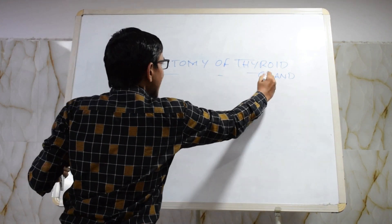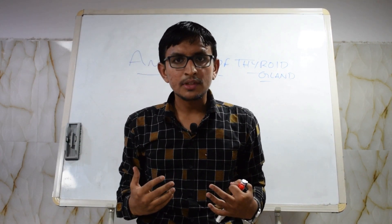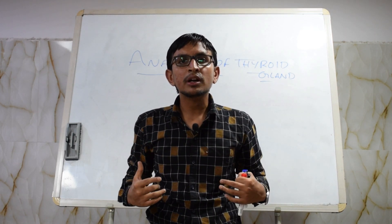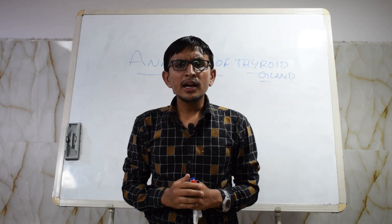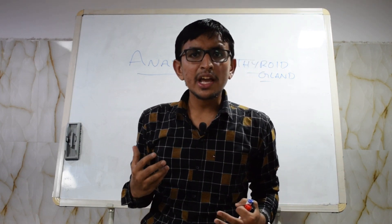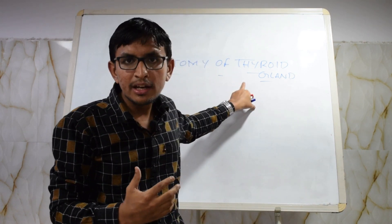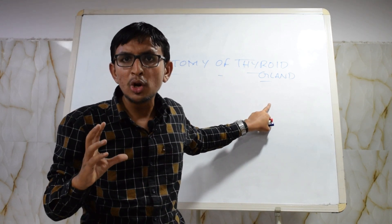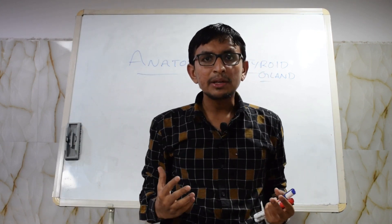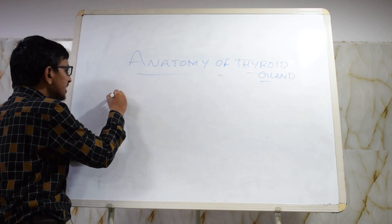The thyroid gland is one of the largest glands in your entire endocrine system. It is so important that it regulates each and every cell present in our body. By releasing thyroid hormones, it controls the basal metabolic rate of each and every cell. To locate roughly where this thyroid gland is, we should first know that it is present in the neck.